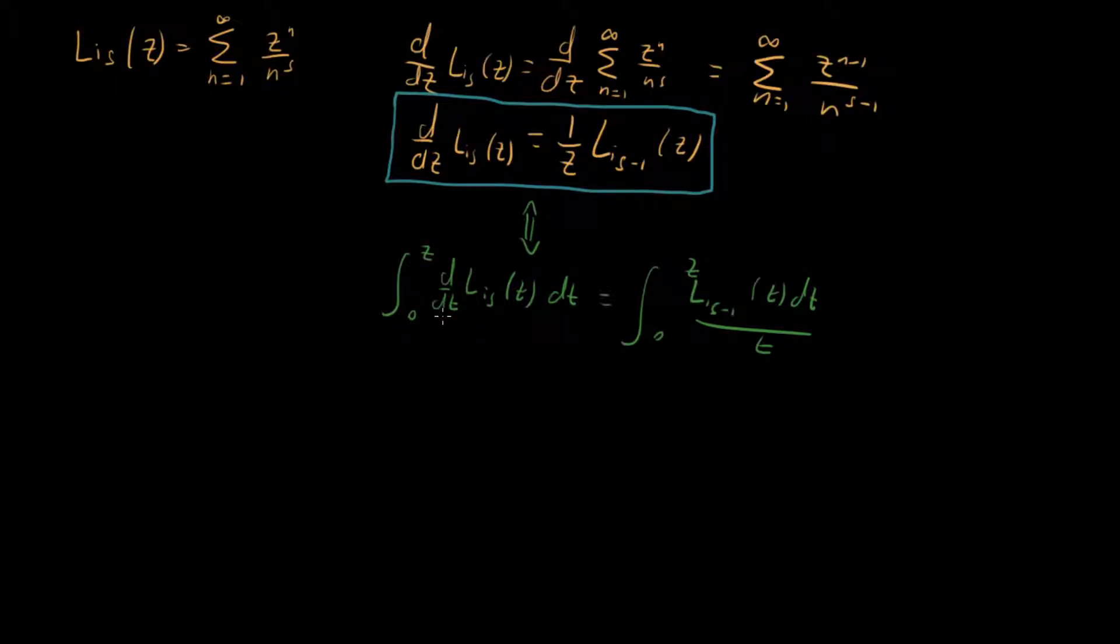What can we say about this left-hand term right here? Well, we know from the fundamental theorem of calculus that this thing is just going to be equal to Li sub s of z. And that's equal to this right hand side, Li s minus 1 of t dt over t.